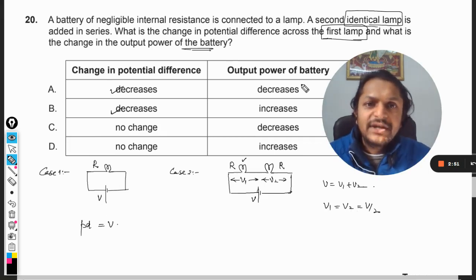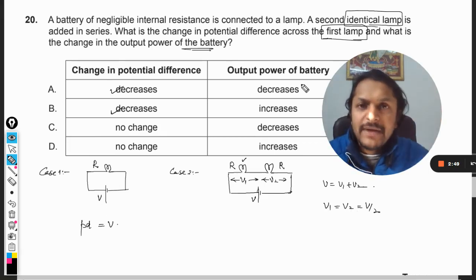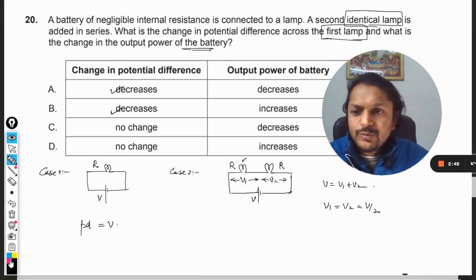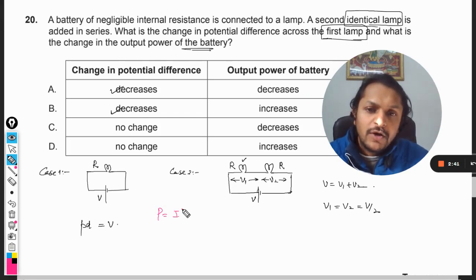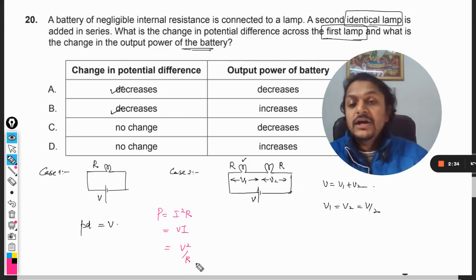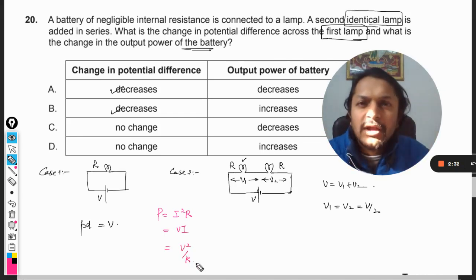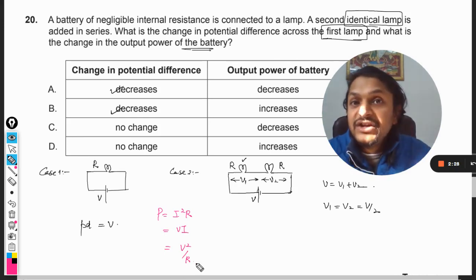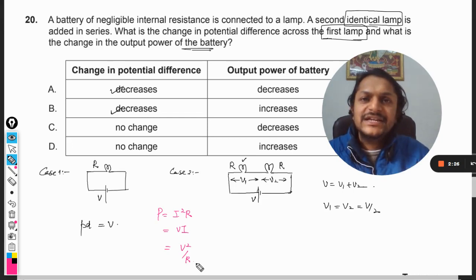Now what is happening to the output power of the battery? When we are concerned with the output power of a battery, there are three formulas for power. One is I square R, another is P equals V into I, and another is V square by R. These are the three different formulas that you must remember.